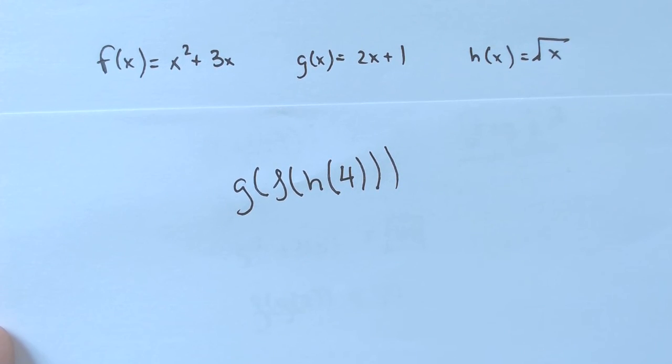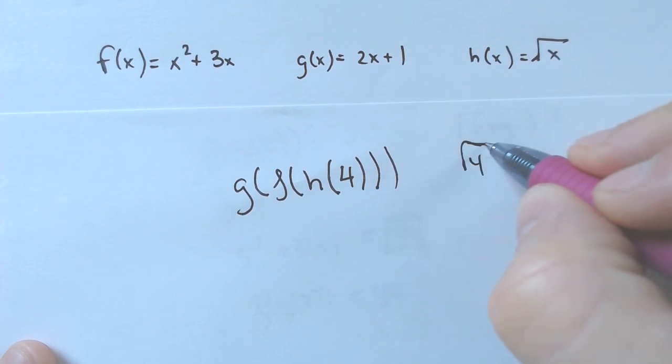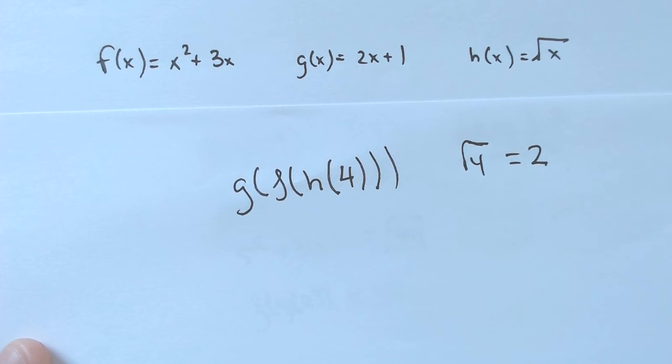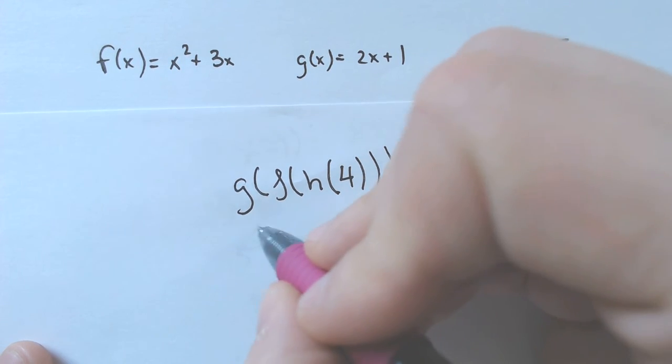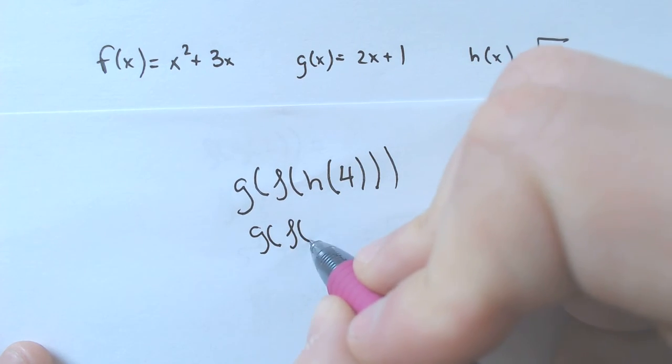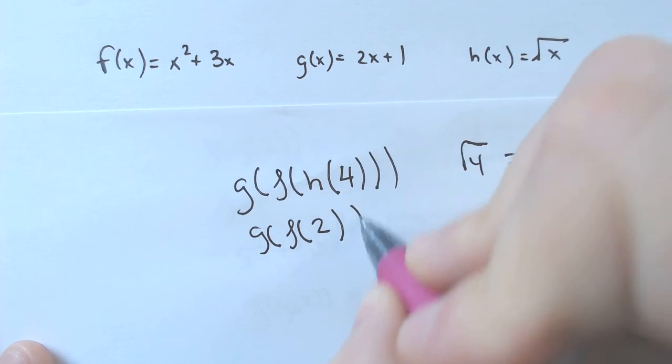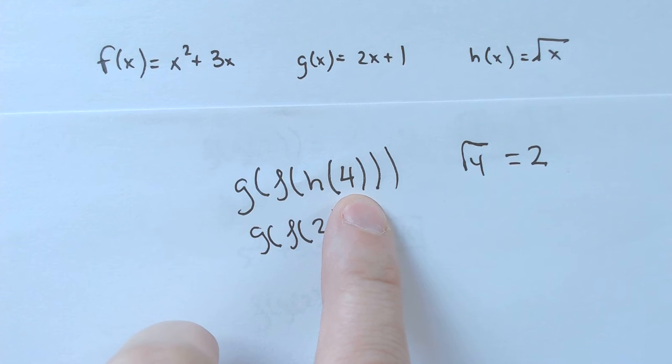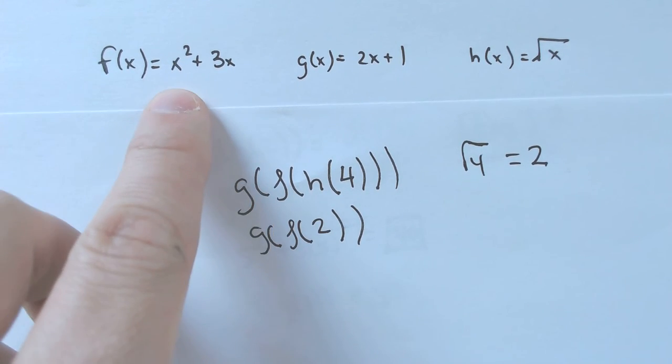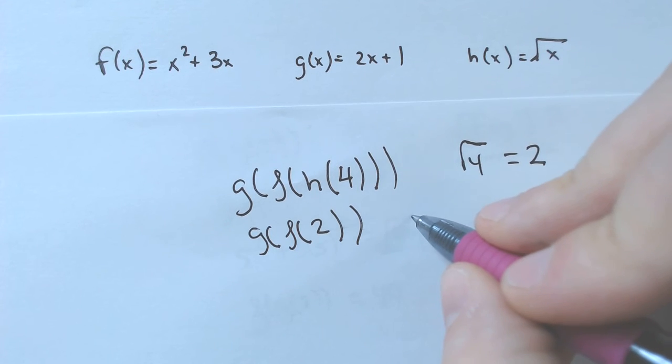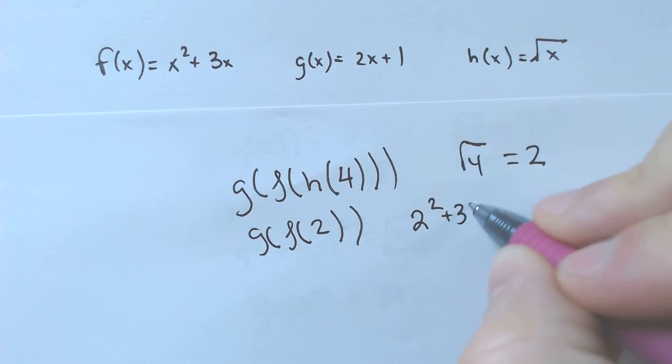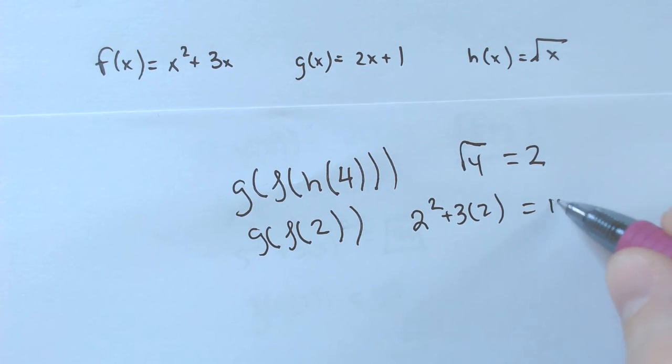Well, if we plug in 4 into h, that would be the square root of 4, which, of course, is 2. And then we're going to have to figure out what is f of 2, because we just figured out h of 4 is 2. That means I plug in 2 into that x squared. Well, 2 squared plus 3 times 2 makes a number. 4 plus 6 is 10.